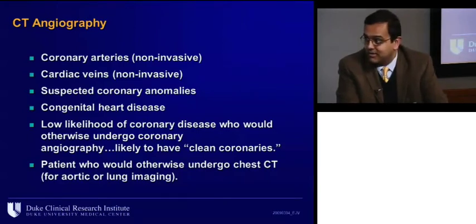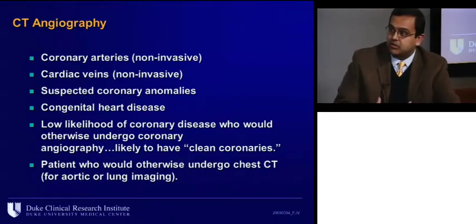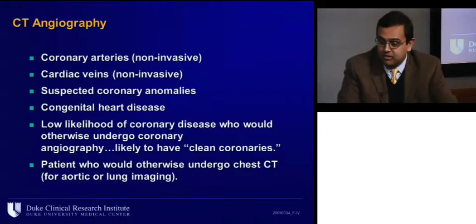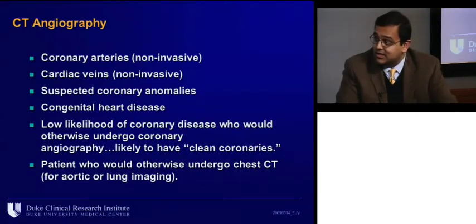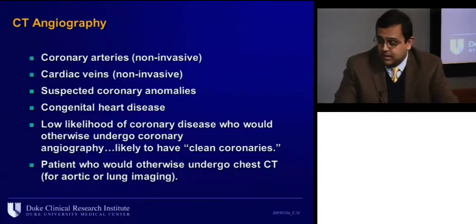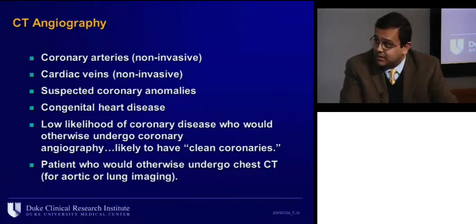That's been a great overview of the general modalities of imaging. Now, Peter, how do you make decisions? We have a 73-year-old gentleman with diabetes, hypertension, and an EF of 15%. Even if the EF were anywhere between 15 and 40, this is now bread-and-butter revascularization in the United States. Do they get PCI? Do they get CABG? Do they get medical therapy plus revascularization, or just medical therapy?